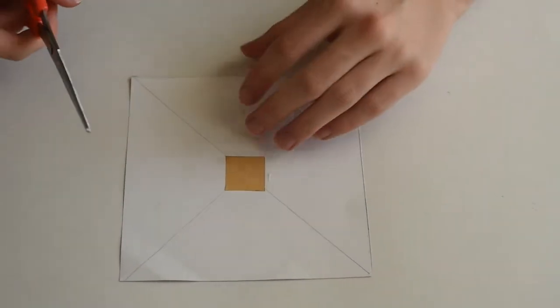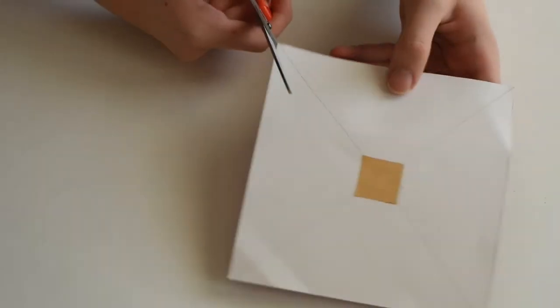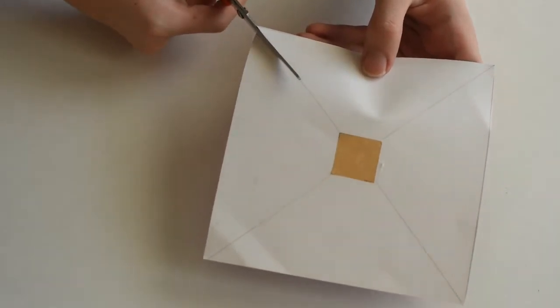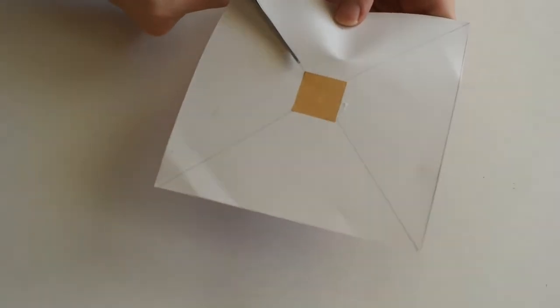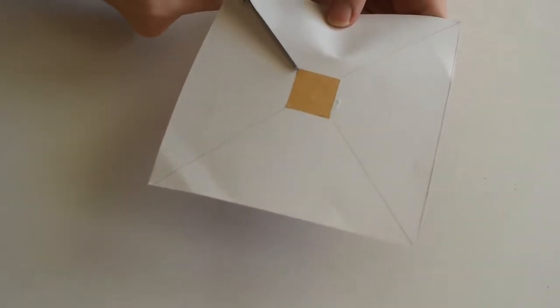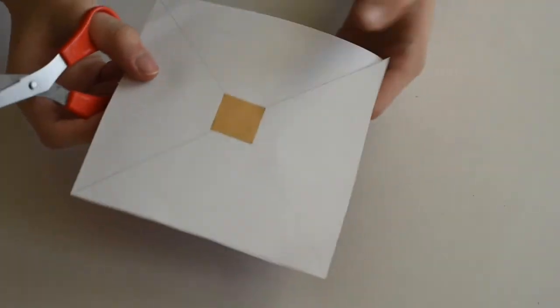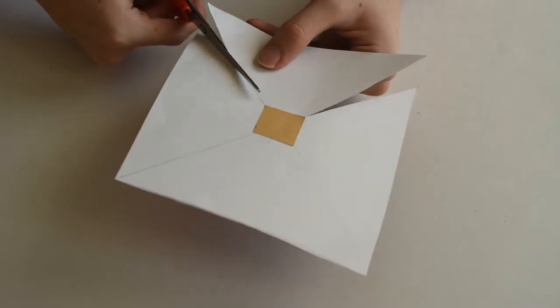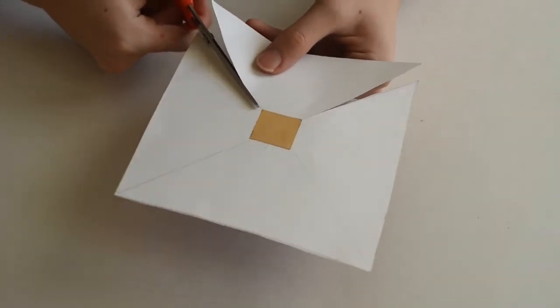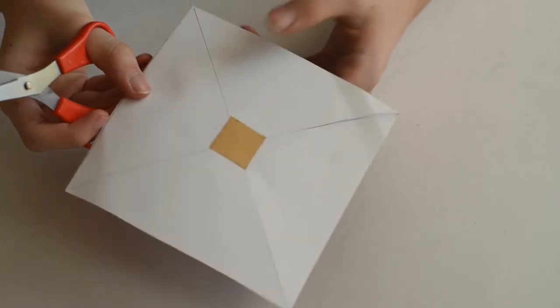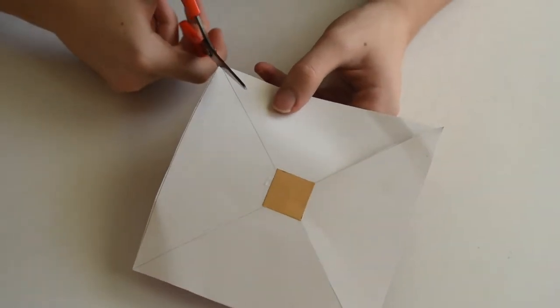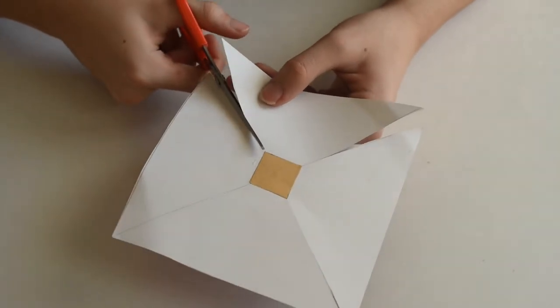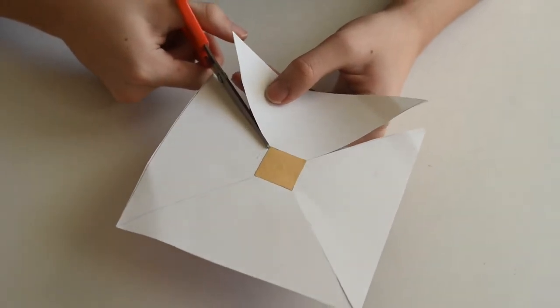Next, you're going to cut along the slanted lines right up to the corner of the sticker.